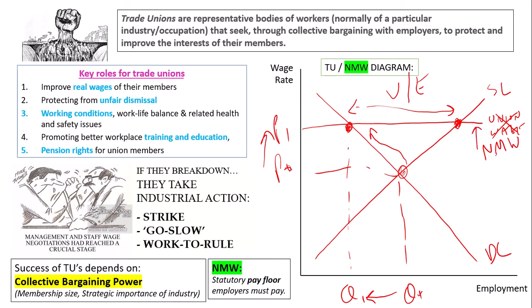Everything else applies. Workers will unfortunately be let go because employers do not want as many of them, and unemployment will be created as more people now want to work because the government has introduced new legislation for higher pay. That's everything about labour market issues on trade unions and national minimum wage. You can repeat the video now and have a go at answering all the questions.